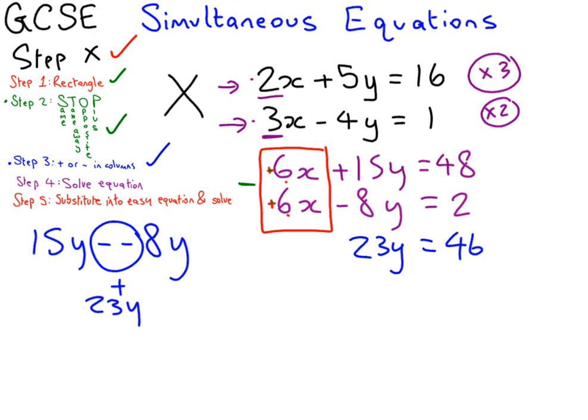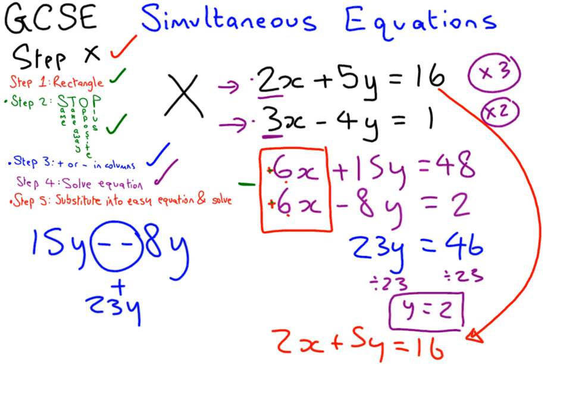Step 4, solve the equation. 23 times y is 46. Divide by 23 on both sides. Y is 2. We've got our first letter. Step 5, we take our letter. We take our easiest equation. I'm going to go for the top one because it's not got any takeaways. And we substitute in. So our top equation is 2x plus 5y equals 16. We know what y is. Y is 2. And we're doing 5 times 2. 5 times 2 is 10. Now we solve this equation. Take away 10 from both sides. So you're going to get 2x equals 6. And divide by 2. You're going to get x equals 3. So that's your two answers. Y equals 2 and x equals 3. Right, that's three examples that we've done working through the same steps every time.